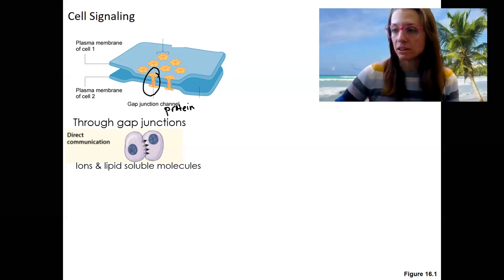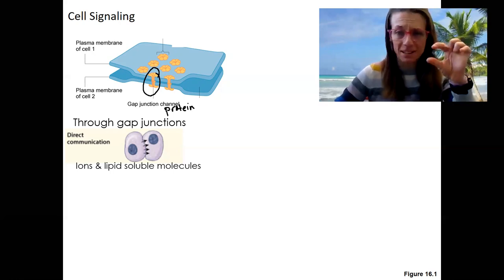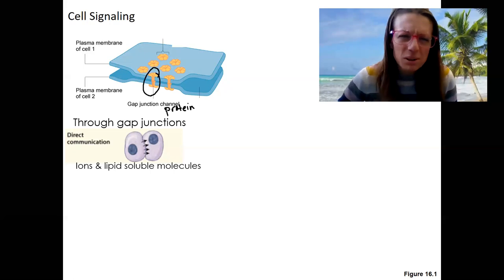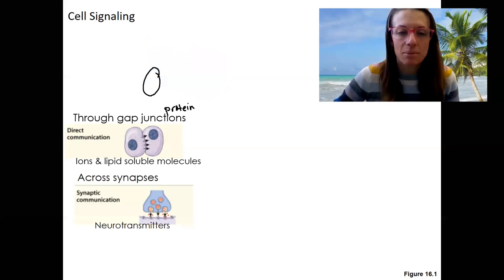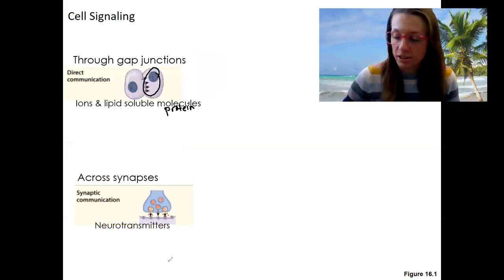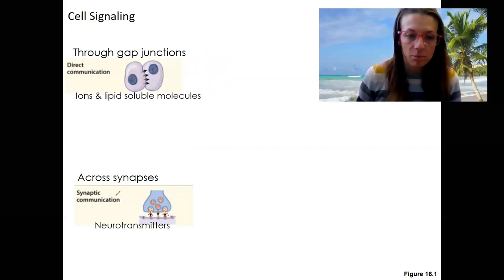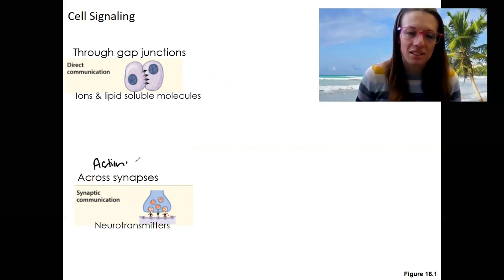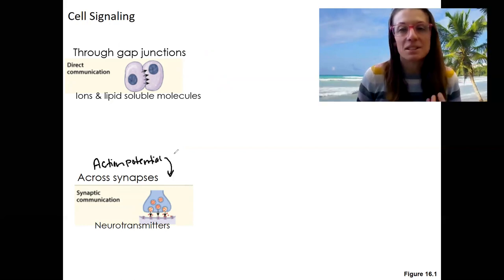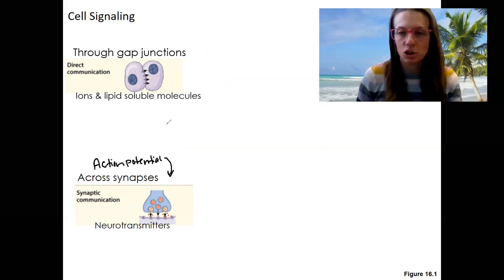We also could have signaling across small space. So opposed to pretty much no space, a little space there, to a little bit of space. That's a synapse. So that is across synapses is going to be synaptic communication. Neurotransmitters are the signaling molecule. This is going to rely on an action potential, right, to trigger this. That's the stimulus for this signal to be released from one cell to talk to another.